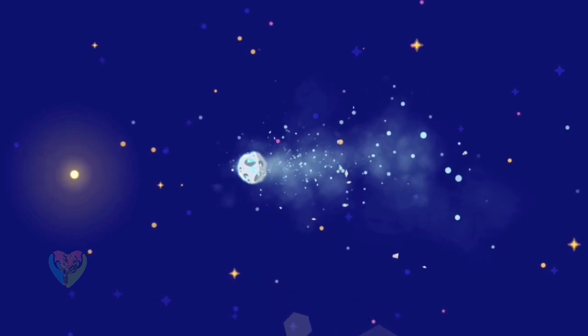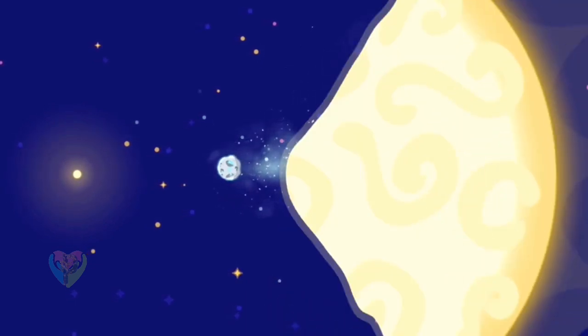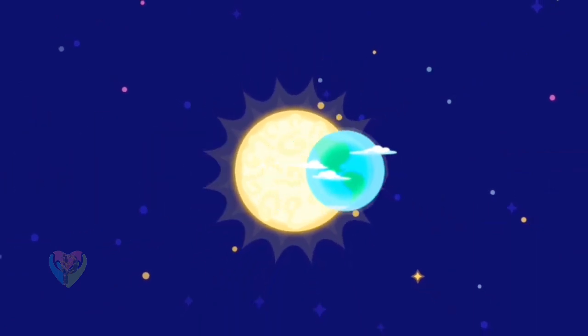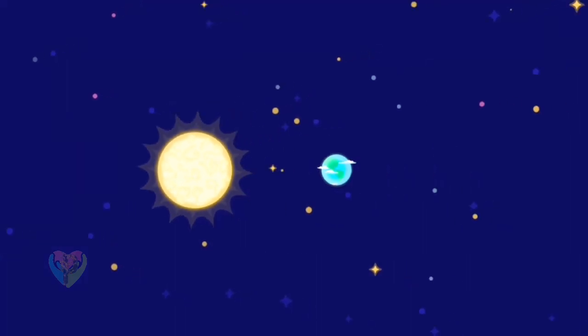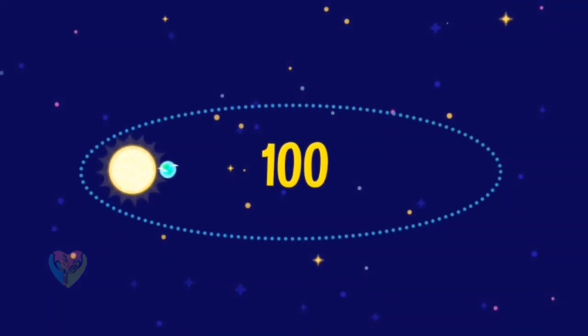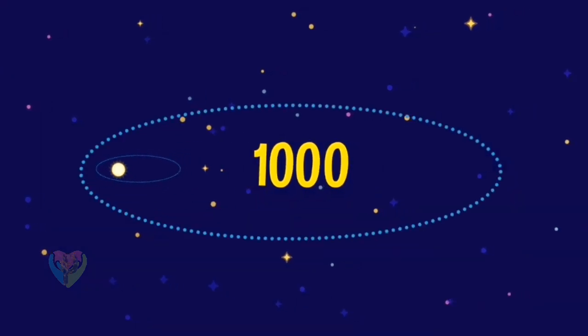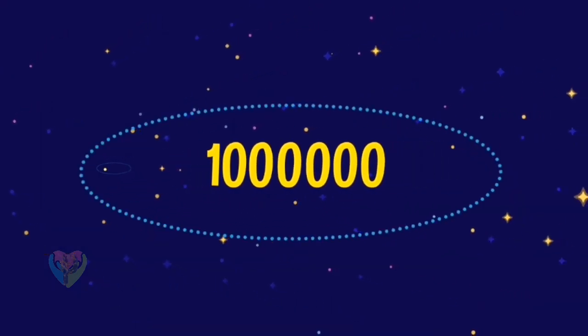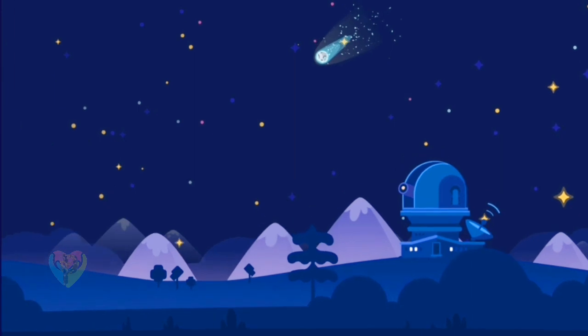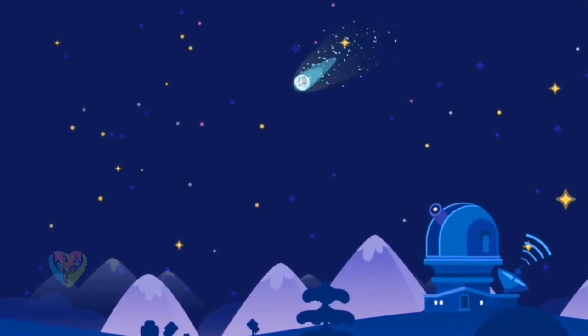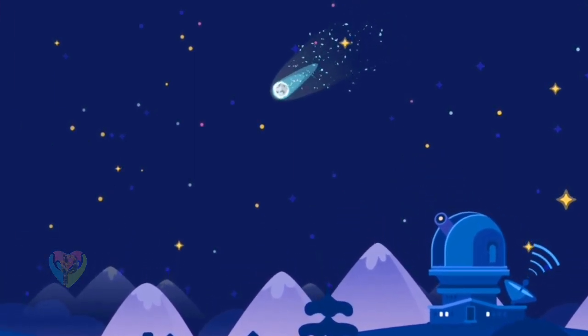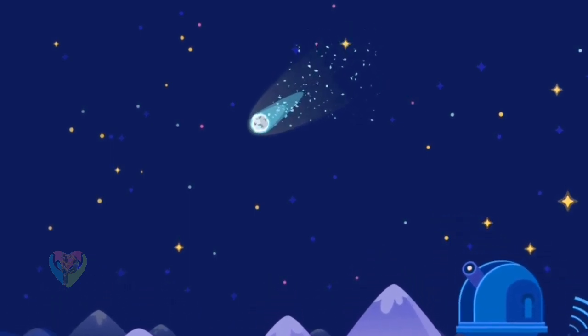Some comets, like planets, orbit the Sun over a period of a few years, but most of them need hundreds, thousands, and even millions of years. For example, the brightest comet of the last century, Hale-Bopp, won't come back to us for 2,000 years.